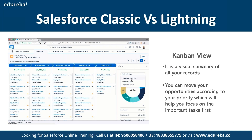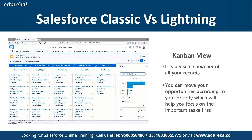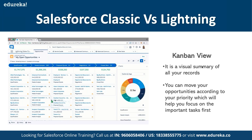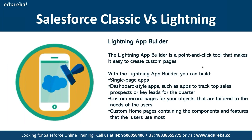One major new feature is the Kanban view — a visual summary of all records familiar to those using Jira or agile and scrum tools. We can move opportunities according to priority, helping us focus on important tasks and get the best out of the available platform.